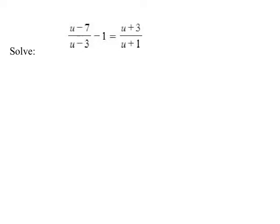To solve this equation, multiply all pieces on both sides by both denominators: (u minus 3) and (u plus 1). This middle term of 1 also has to be multiplied by (u minus 3)(u plus 1) — a lot of people forget this. The whole point of doing that is the denominators cross out, leaving a new equation.